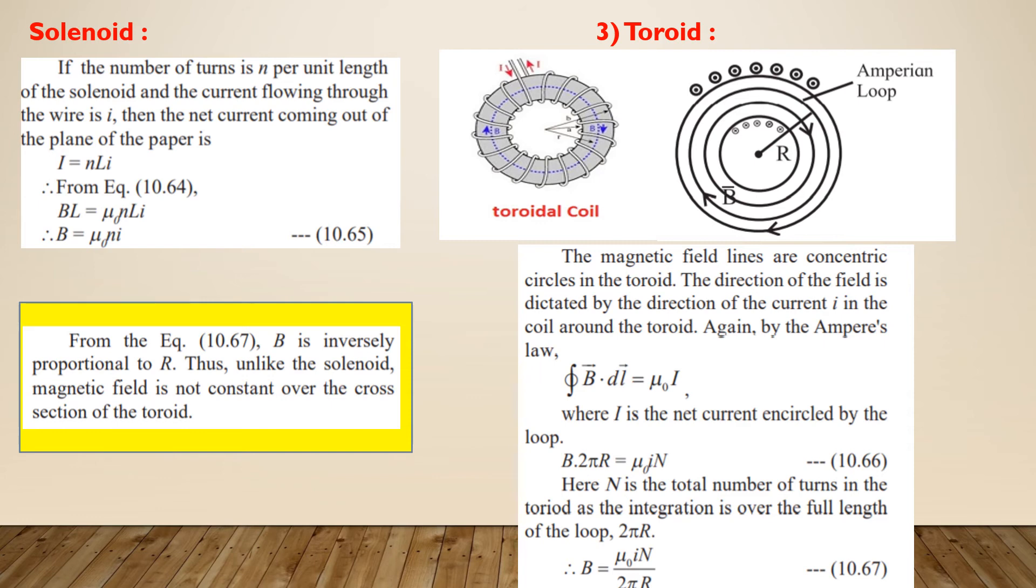Substituting this value in the previous equation, we can get the final expression for the magnetic field inside a solenoid as B is equal to mu0 N I.